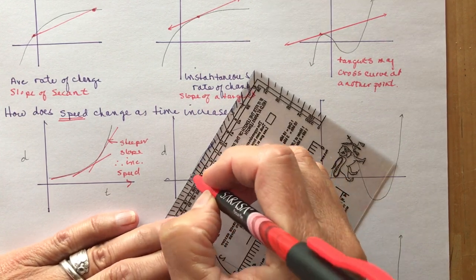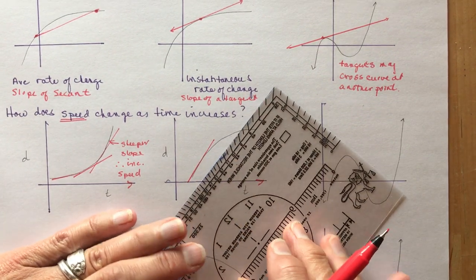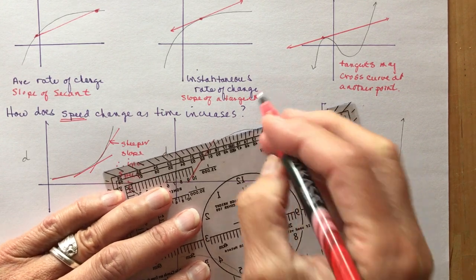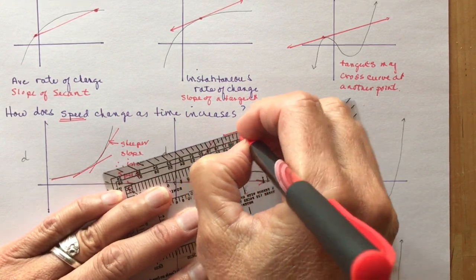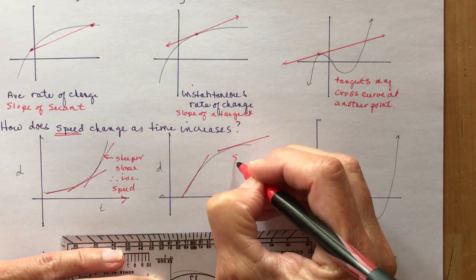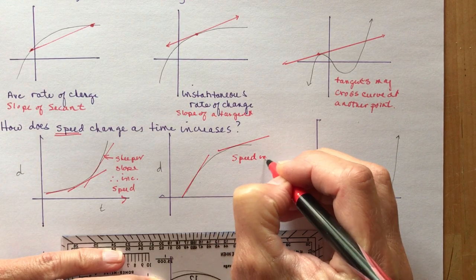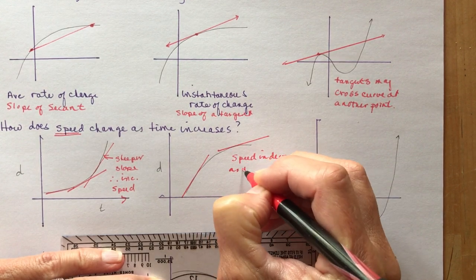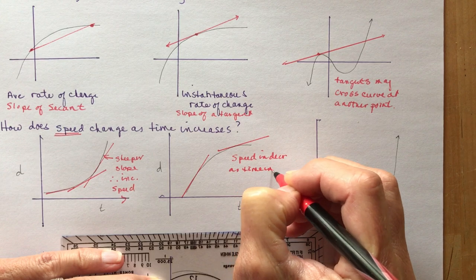As time increases, that means going this way, reading left to right—we usually do that in math. Here you can see the speed was pretty fast, but as you go from left to right you can see now that the speed is decreasing. Speed is decreasing as time increases.